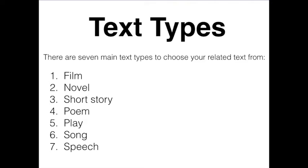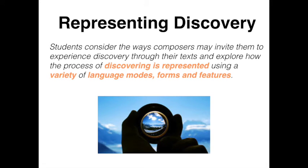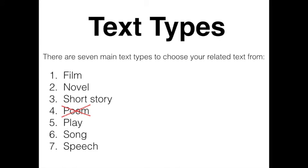The second step in choosing a related text is to choose an appropriate text type. There are seven main text types to choose from: film, novel, short story, poem, play, song, and speech. I'd strongly recommend choosing a related text that is different from your prescribed text. The discovery rubric states that students consider the way composers invite them to experience discovery through their texts, and explore how the process of discovering is represented using a variety of language modes, form, and features. The key word is variety. So the first thing I'd recommend doing is crossing out the text type of your prescribed text. Because my text type is the suite of Robert Frost's poetry, I cross out poem first.